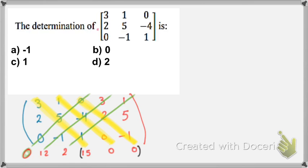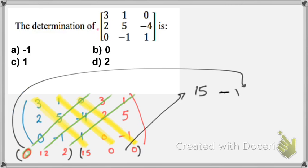I start by adding the product of the three diagonals, the yellow diagonals, which gives me 15, minus the sum of the product of the three green diagonals to give me 12. So the answer is 15 minus 14, which